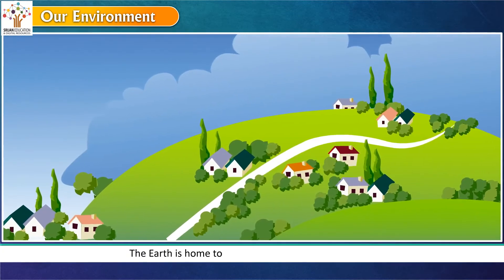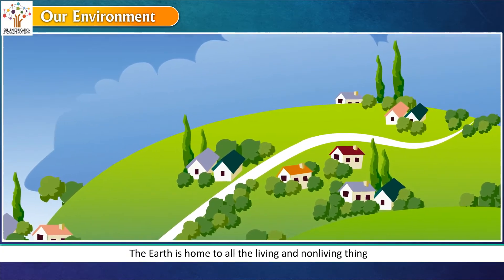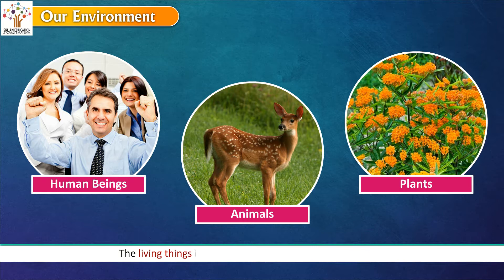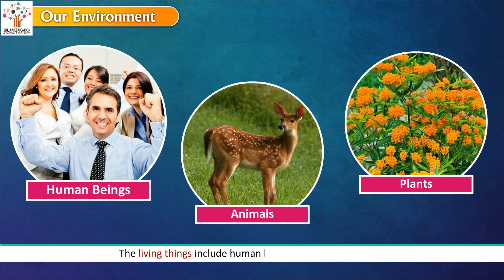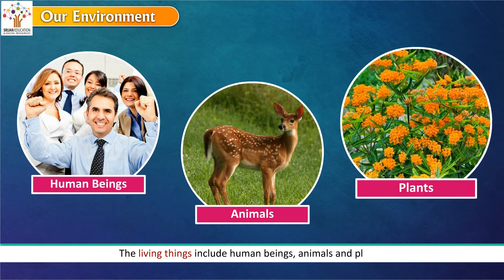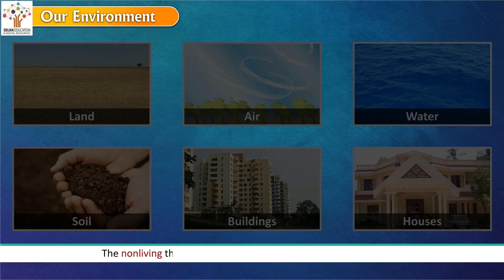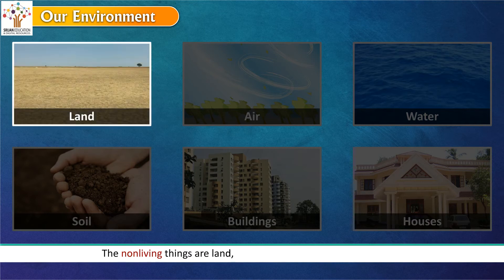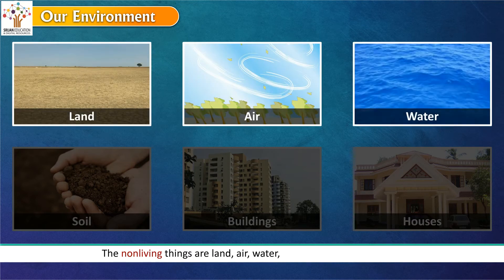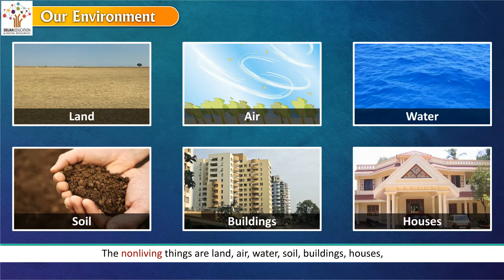The earth is home to all the living and non-living things. The living things include human beings, animals and plants. The non-living things are land, air, water, soil, buildings, houses, etc.